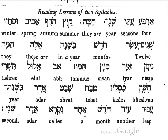Nisan — the month of Nisan. Iyar — the month of Iyar. Sivan — the month of Sivan. Tammuz — the month of Tammuz; notice in English we put the double M. Ab — the month of Ab. Elul — the month of Elul.